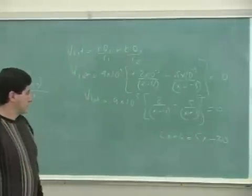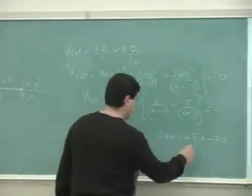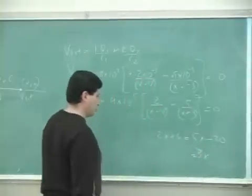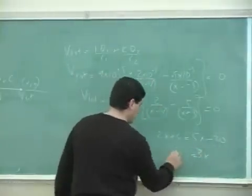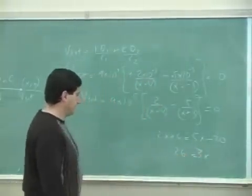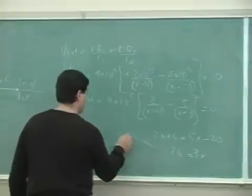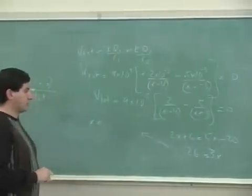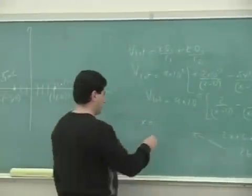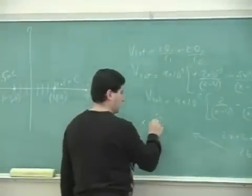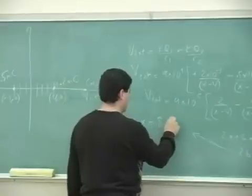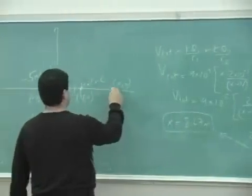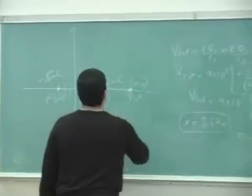We get 2x plus 6 equals 5x minus 20, and 3x is equal to 26. 6, and x equals 26 over 3, 8 and 2 thirds, 0.67.